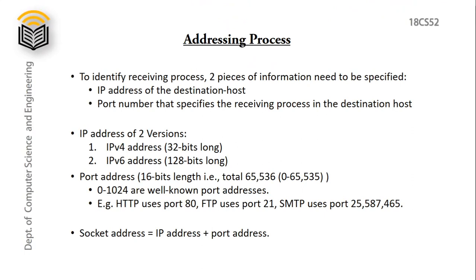Addressing Processes: To have communication between processes, we use addresses. To identify the receiving process, two pieces of information must be specified: the IP address of the host and the port number which specifies the receiving process. IP addresses come in two versions — IPv4 of 32-bit length and IPv6 of 128-bit length. Port addresses are 16-bit, consisting of 65,536 ports; ports 0 to 1024 are well-known port addresses. For example, HTTP uses port 80, FTP uses port 21, and SMTP for mail transfer uses ports 25, 587, and 465. The combination of both IP address and port address is called the socket address.